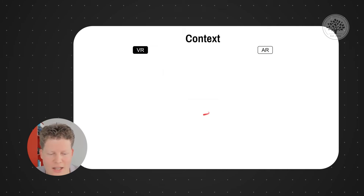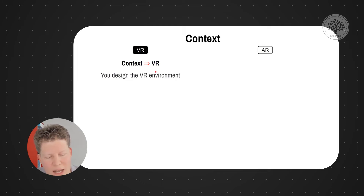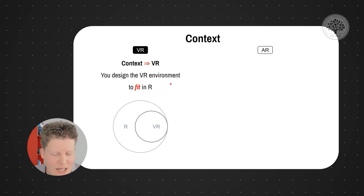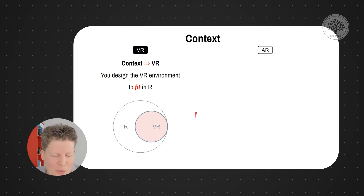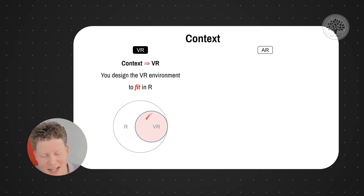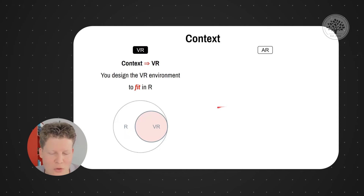When we think about context, we need to distinguish between virtual reality and what happens there. In VR, you actually design the virtual environment — you are responsible for creating the environment you put your user in. You have to make sure it fits within whatever physical reality people have at home. For me, it started like laying out a little carpet on the floor and making sure I don't step outside the boundaries and hit anything.